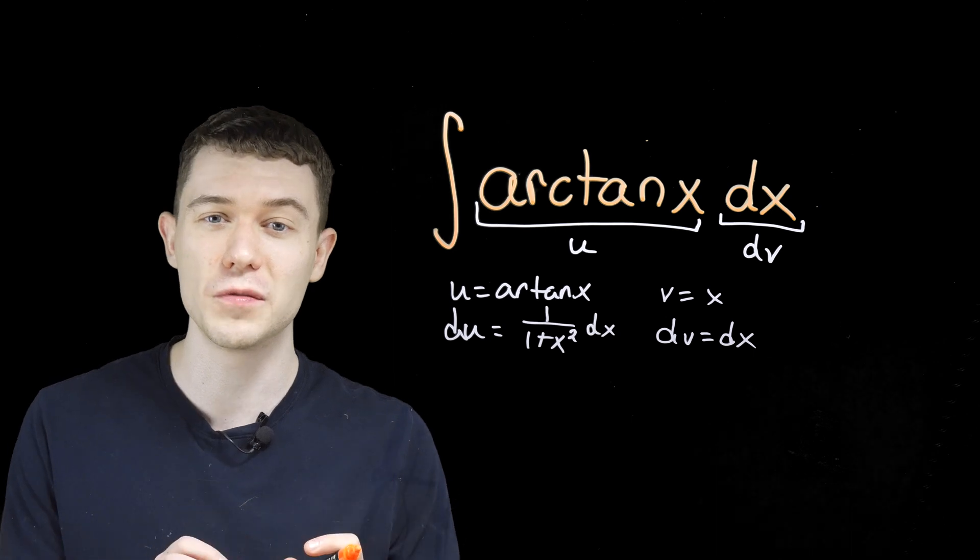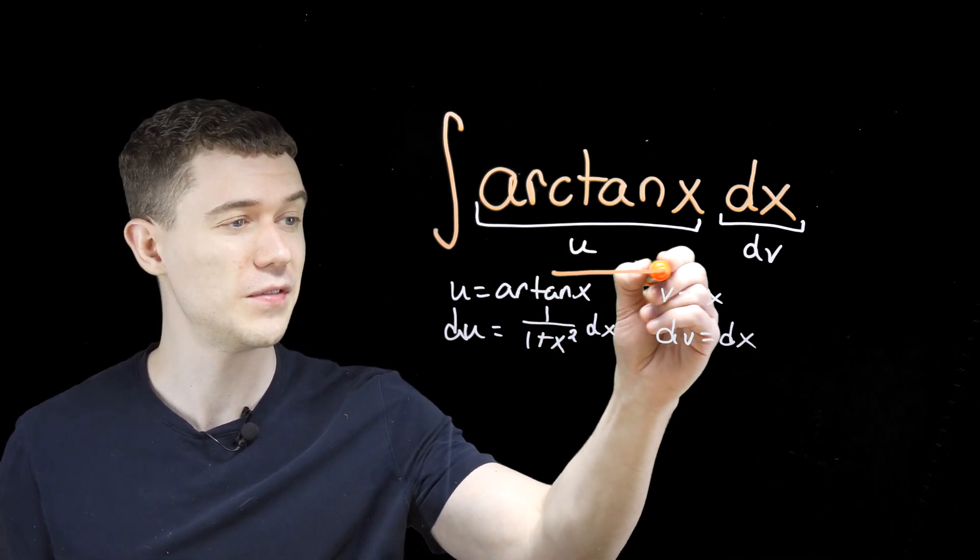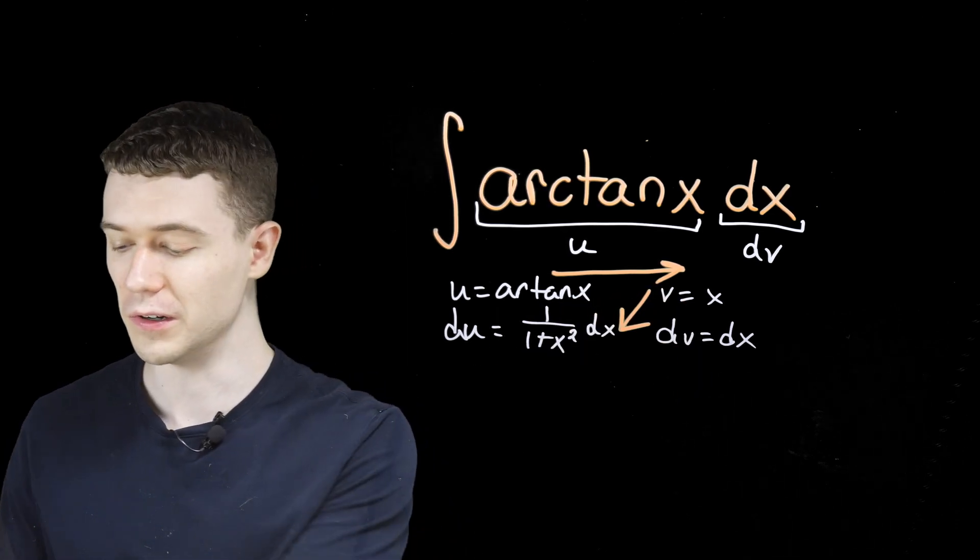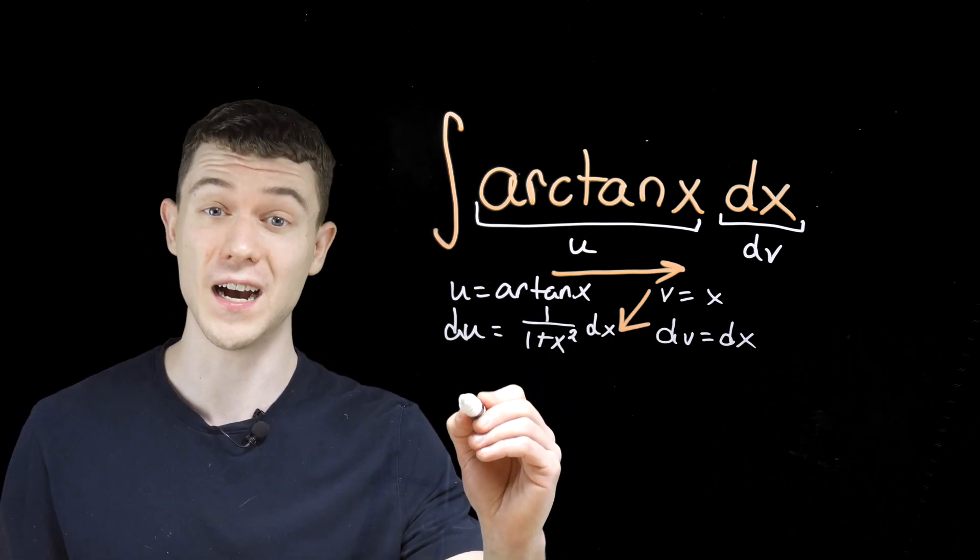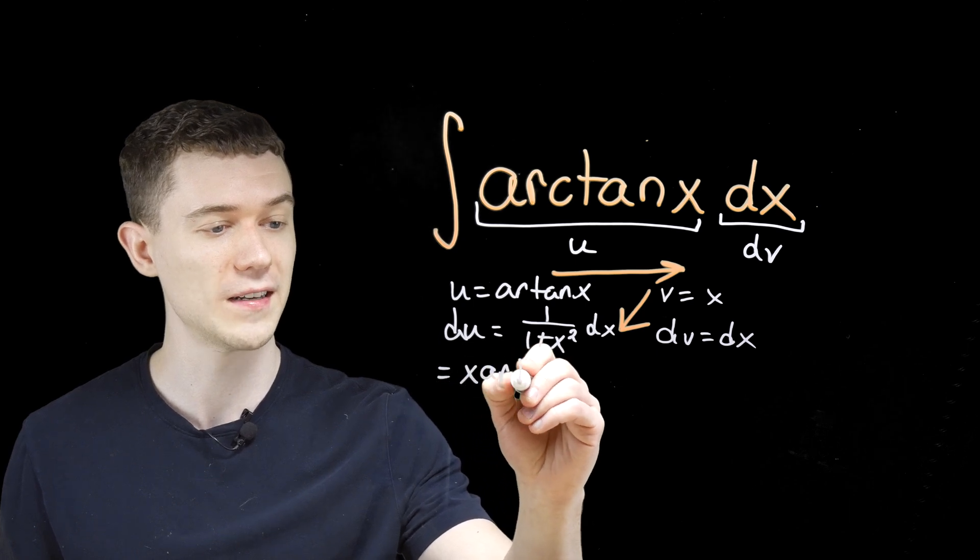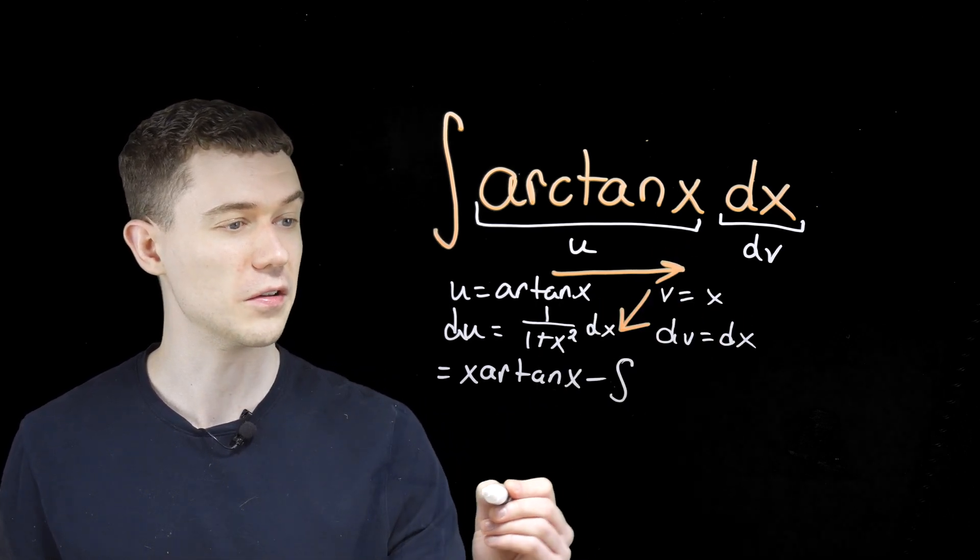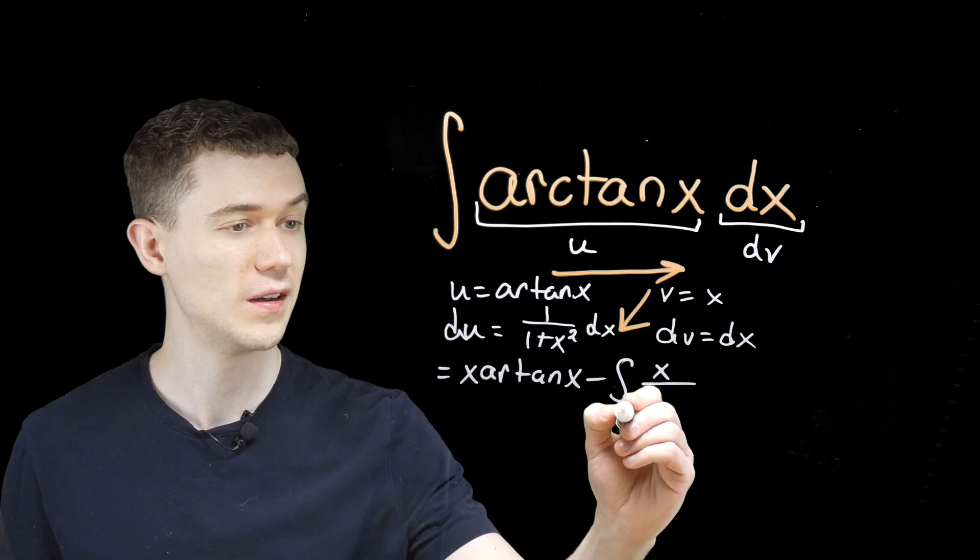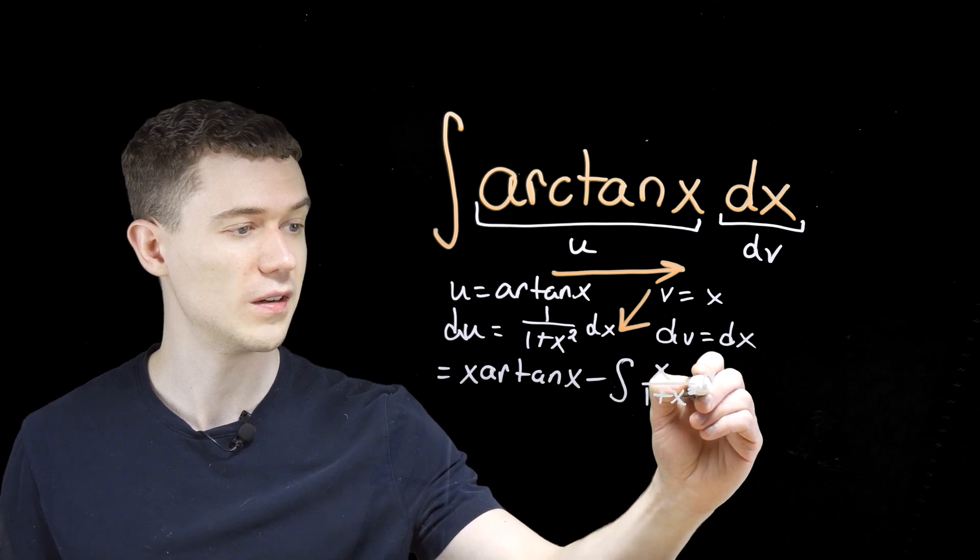Now, I write it this way because I like to remember how integration by parts works like this. It's u times v, so I do an arrow that way, minus the integral of v du. I do a little arrow that way. So it's u times v. That would be arctan(x) times x. I'll simply write this as x arctan(x). Looks a little bit better. And then it's minus the integral of the arrow going the other way. That's x times 1 over 1 plus x squared. Or, I'll just say x over 1 plus x squared dx.